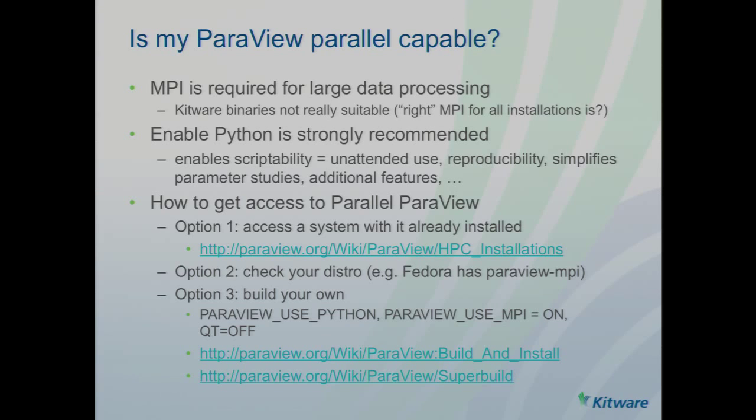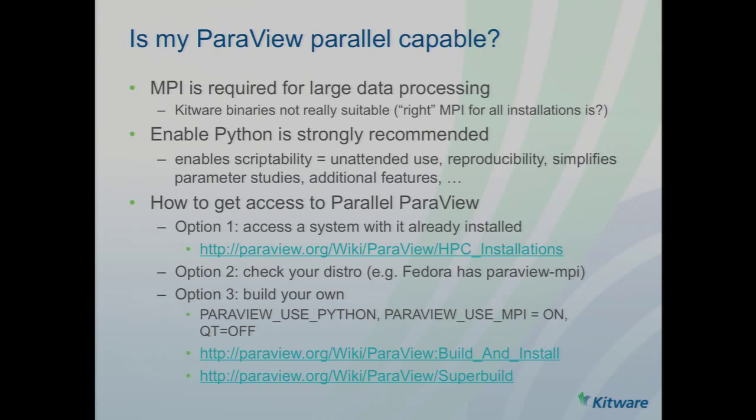How do you know if your ParaView is capable of running on big data? The ParaView binaries you can download from Kitware, although some have MPI turned on, are almost never what you want to use for large data processing. We wrap up some version of MPI, and depending on the operating system and version, we sometimes deliver it with our binaries — but that MPI is almost never compatible with the MPI installed on your cluster. And even if compatible, it's almost never efficient on your resource. So you definitely need MPI turned on.